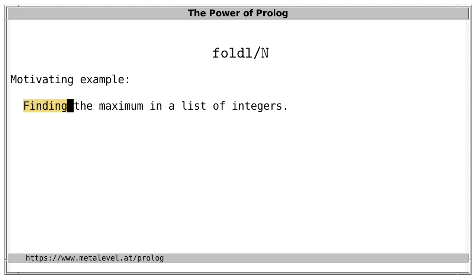that's a very imperative way to phrase this task and suggests only one direction of use because this suggests that the list is given and we must find the maximum. But, as declarative programmers, we of course want to aim for something more general. We want to describe the maximum in a list of integers. Because we want to be able to generate, test and complete such lists in all directions, even if no elements are initially given.